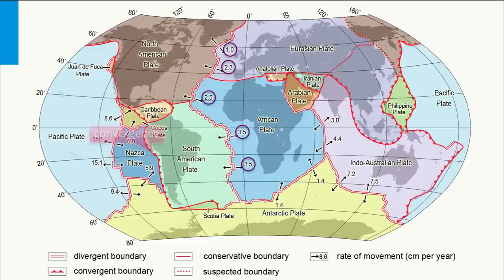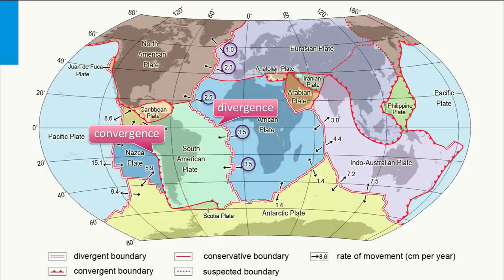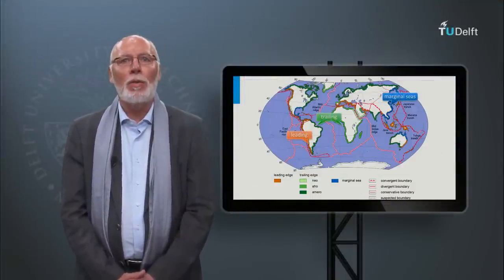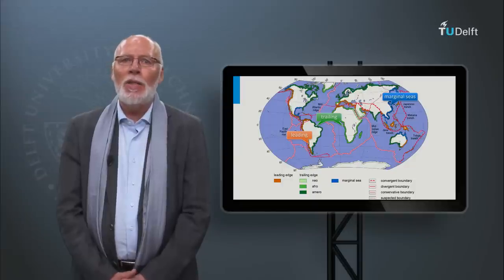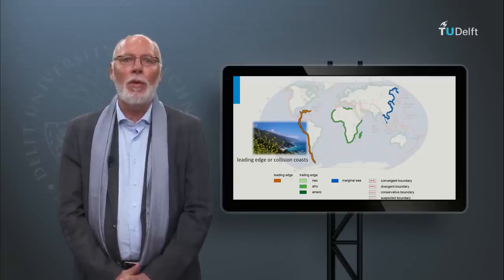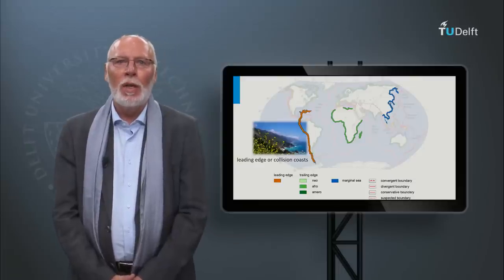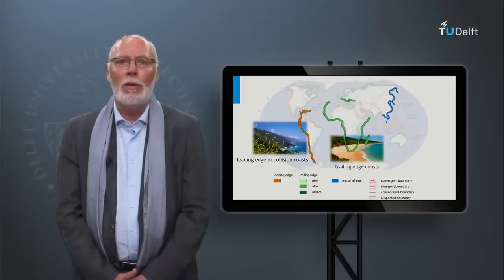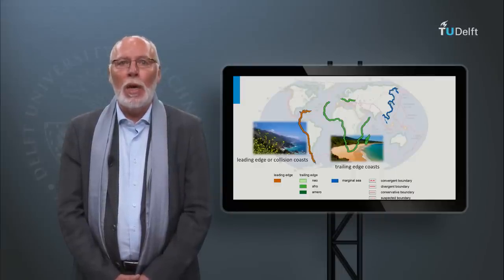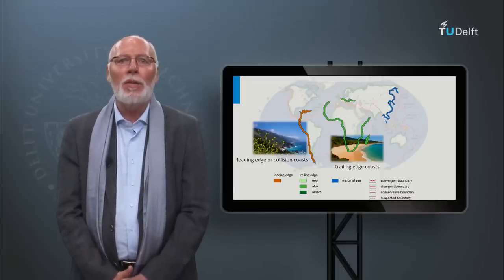We see that plates collide or converge on one side and diverge on the other side. Inman and Nordström in the early 1970s were the first to observe that the first-order character of a coast is determined by its position on the earth's plates. Three main classes of coasts are distinguished. The first class are leading edge or collision coasts, associated with the leading edge of a crustal plate; they are characterized by rugged cliff coastlines, tectonic activity and a narrow shelf. The second class are trailing edge coasts, located away from plate boundaries and generally tectonically stable, with wide continental shelves. And finally, the third class: marginal seacoasts.